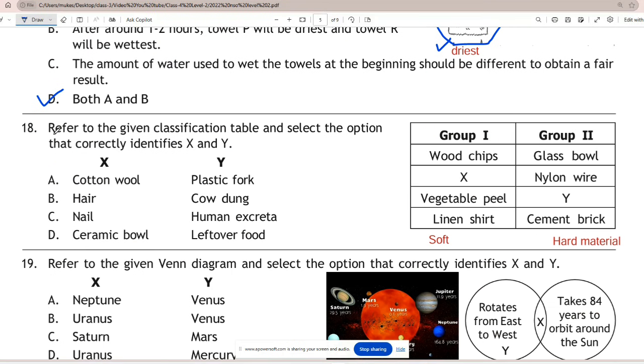Question 18: Refer to the given classification table and select the option that correctly identifies X and Y. Correct answer is A - X is cotton wool and Y is plastic fork. Category X is soft items while Y is hard material.